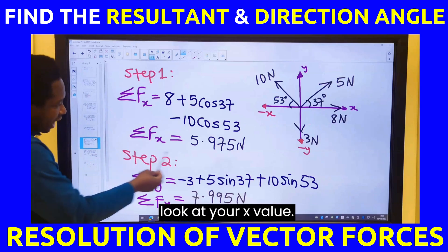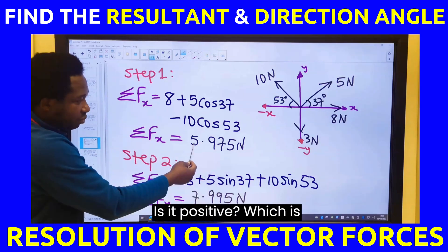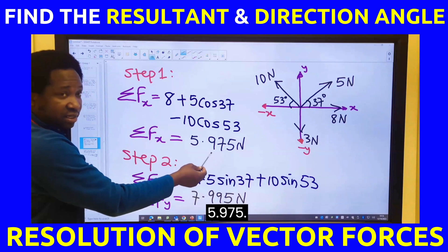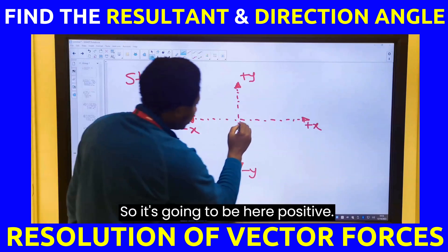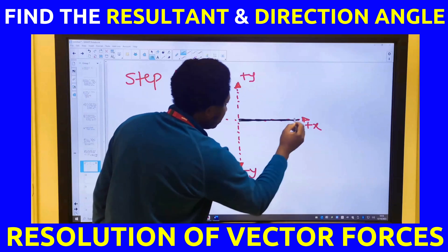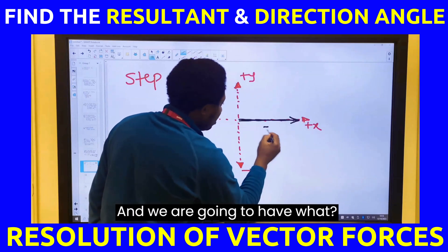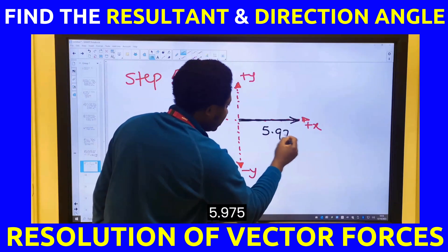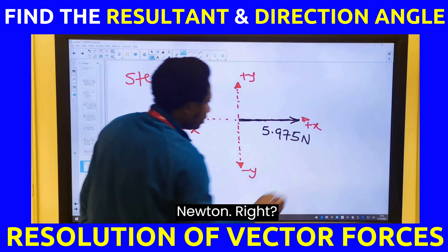After you have done this, next, look at your x-value. Is it positive? Which is 5.975. So, it's going to be here, positive. And we are going to have 5.975 newtons.